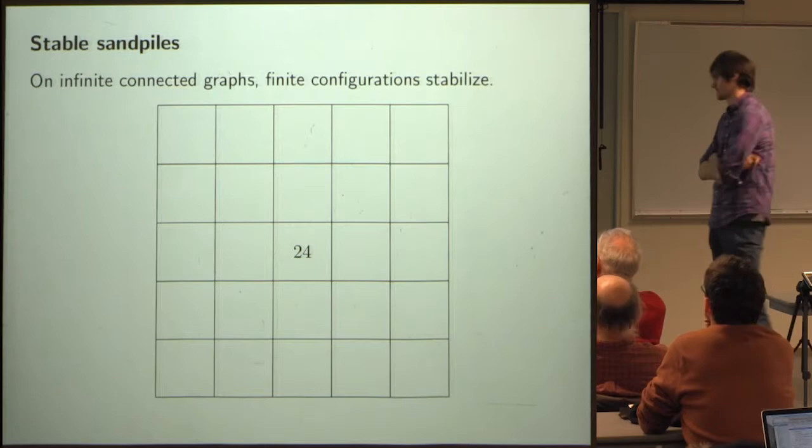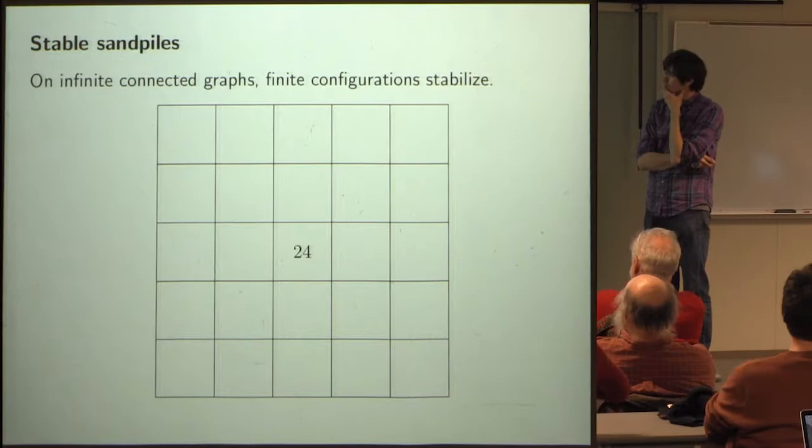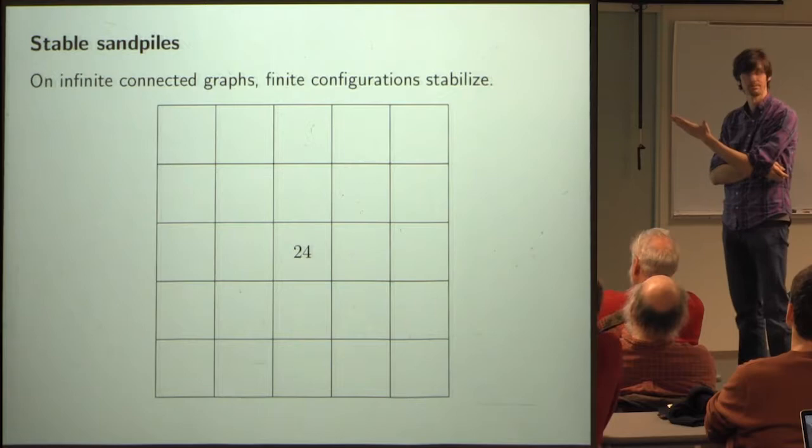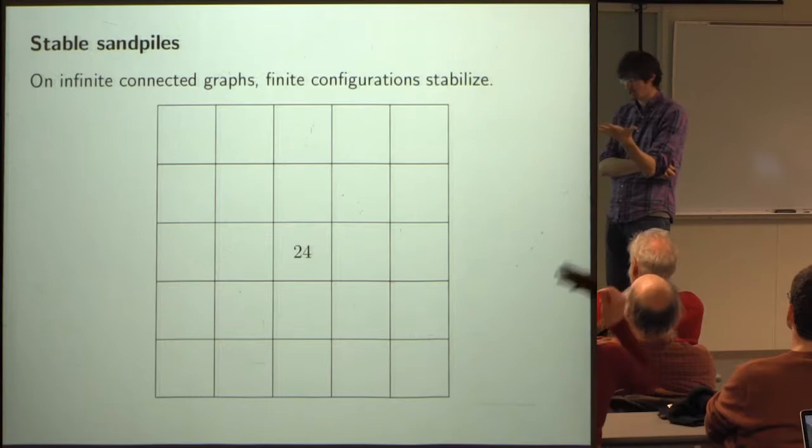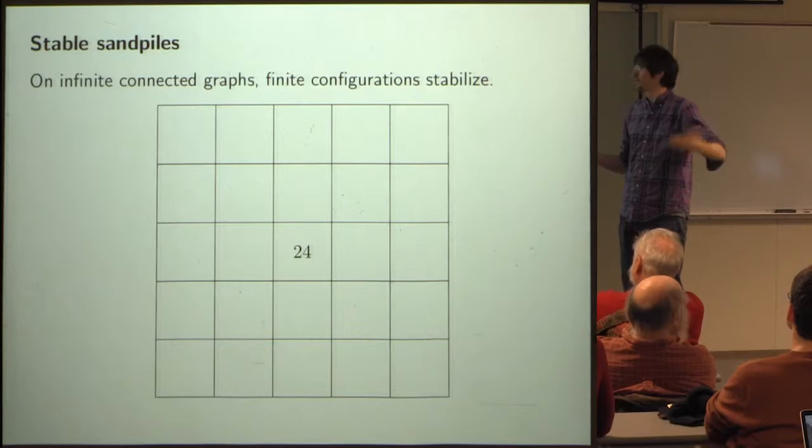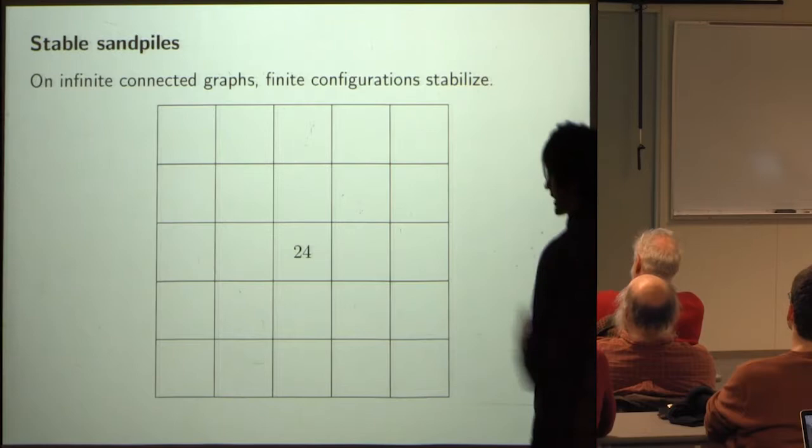Rather than on a finite graph, we're going to look at the sandpile on infinite periodic graphs — say, on the square lattice. On infinite connected graphs, the sandpile has a nice feature: if you start with a configuration that's finite, meaning finitely many total chips, then that configuration always eventually stabilizes.